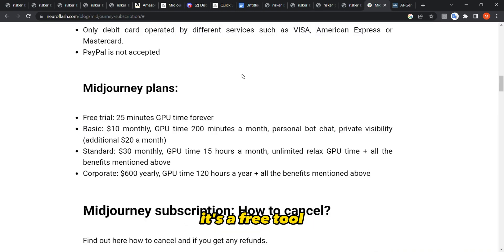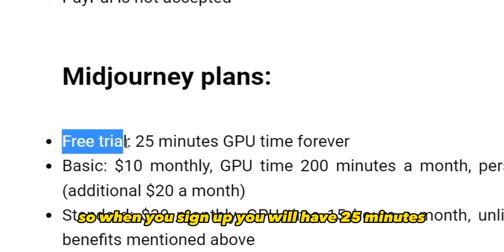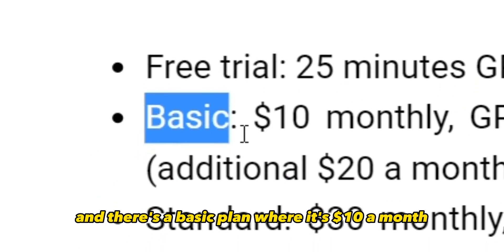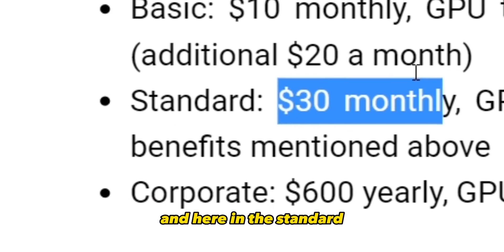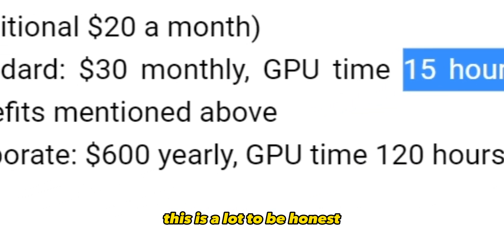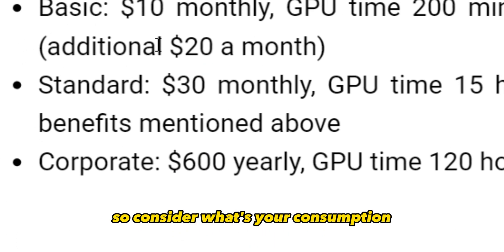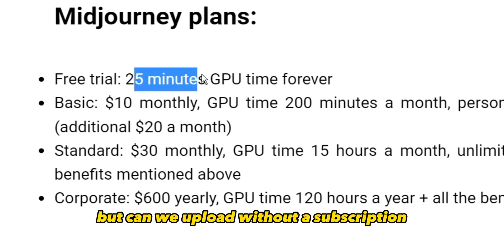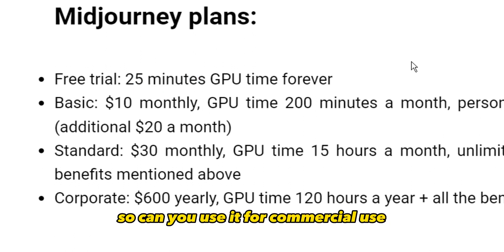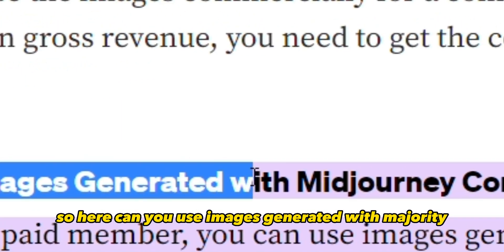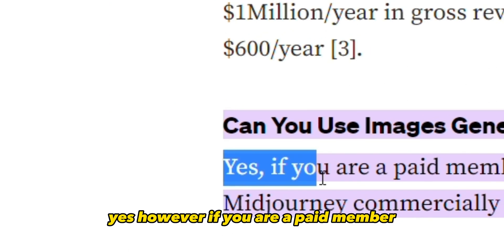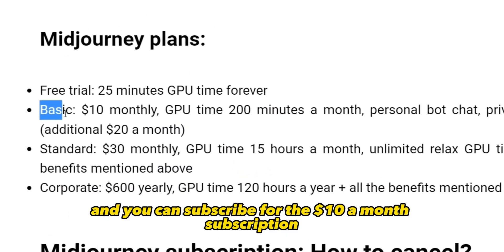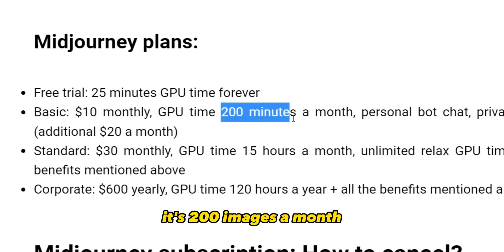Midjourney is free, but when you sign up you only get 25 minutes of GPU time — roughly 25 images — for free. After that, there is a basic plan at $10 a month and a standard plan at $30 a month, where you can create up to 15 hours worth of images per month. Regarding commercial use: you can only use Midjourney images commercially if you are a paid member, according to their terms.